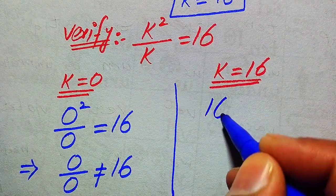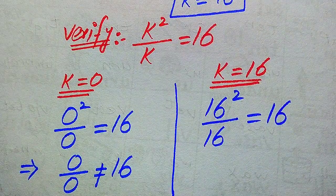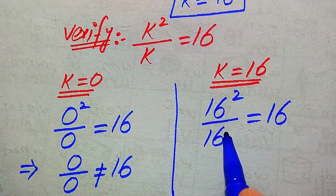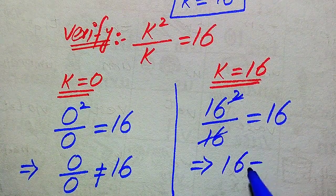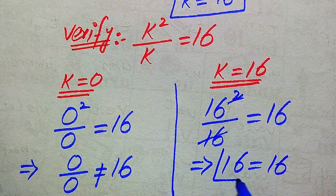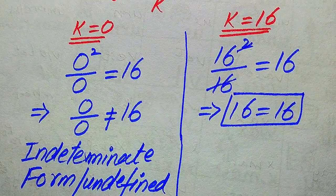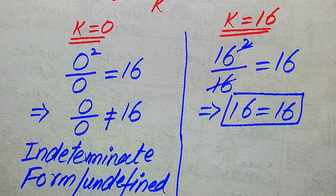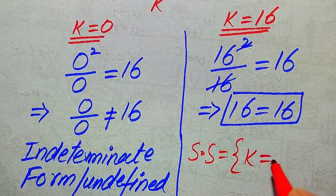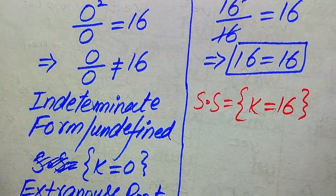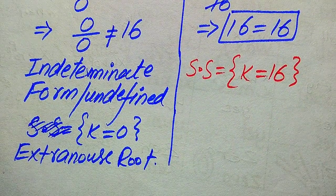Now we verify k equals 16 by substituting into the left-hand side: 16 squared divided by 16 equals 16. The 16 in the numerator and denominator cancel, giving us 16 equals 16. Both sides are equal, so k equals 16 satisfies the equation, and the solution set is k equals 16.